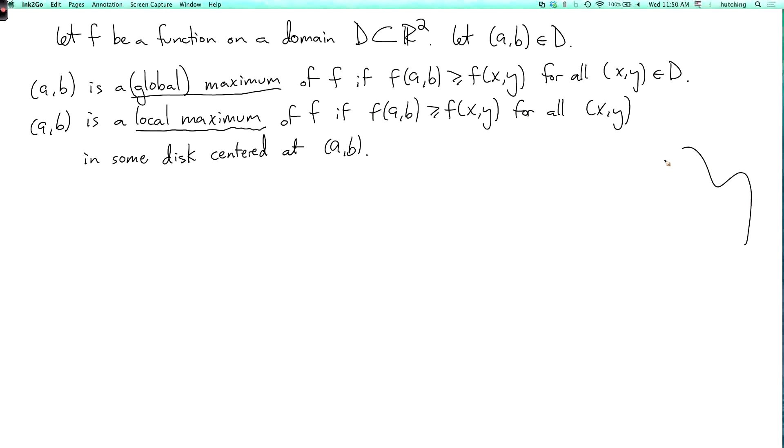So here's our whole domain, and here's our point (a,b). So it's a global maximum if f takes the largest possible value at this point. And it's a local maximum if there's some disk centered at this point so that, at least in this disk, f takes its largest value at (a,b). But it may take an even larger value someplace outside of the disk.